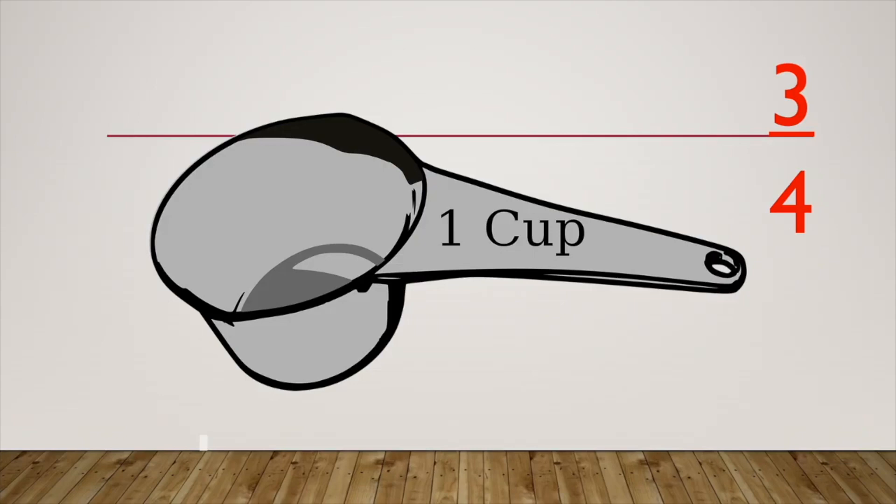We know that the denominator tells us how many parts we divide the whole into. In this case, we divide it into four equal parts. Each part is one part out of the four total parts, or we can say one-fourth.